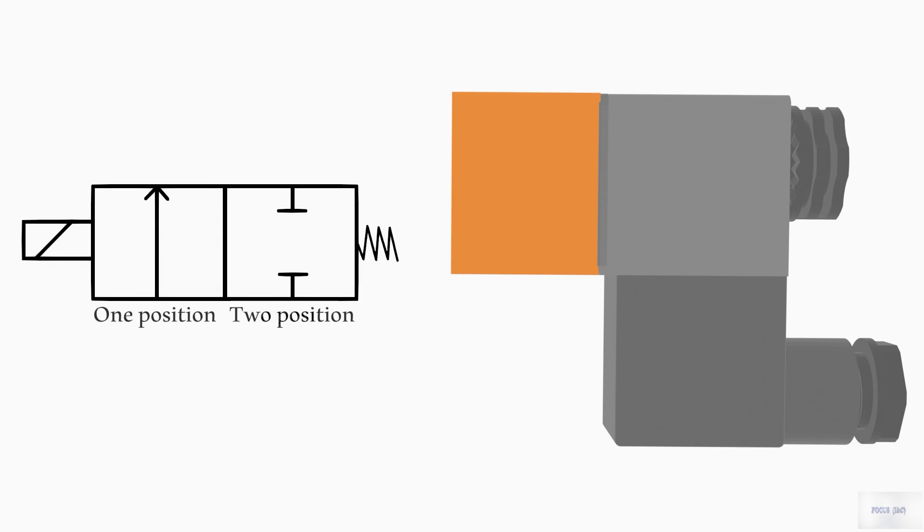The arrow inside a solenoid valve symbol indicates the direction of the flow path. This sign indicates the electric solenoid and this one is for the spring return.